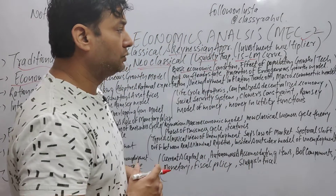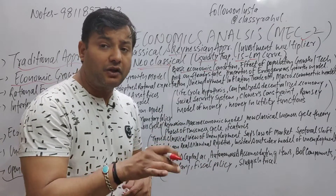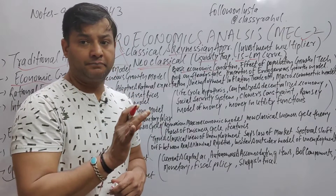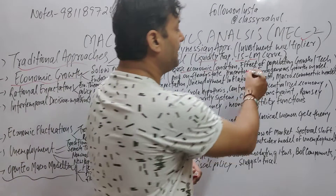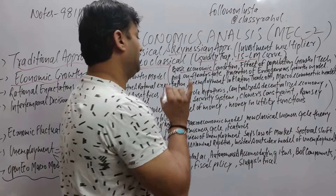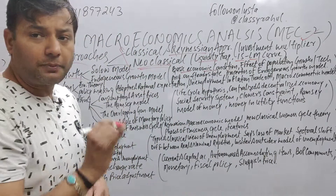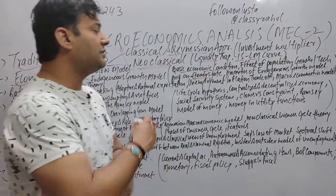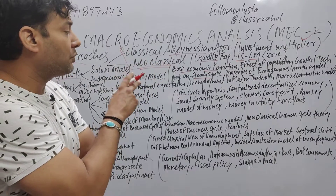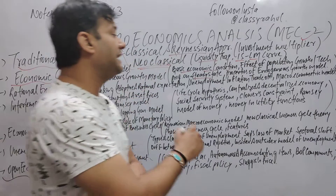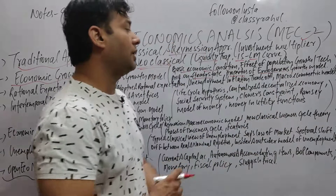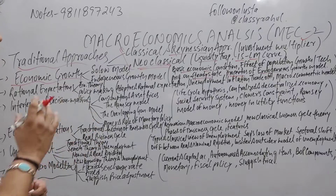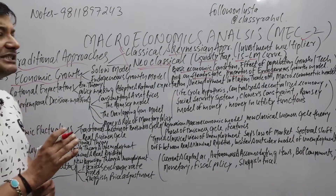The next topic: effect of population growth. What does effect of population growth or effect of technological growth mean? Both of these, and then we have the problems on steady state — what is steady state and technological growth. Then the properties of endogenous growth model: you need to clearly understand these properties on tip so that you can easily understand them.